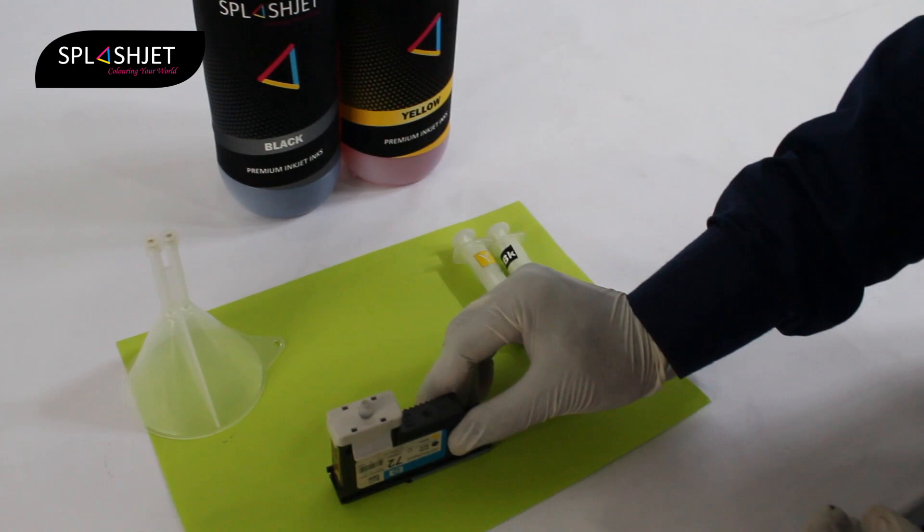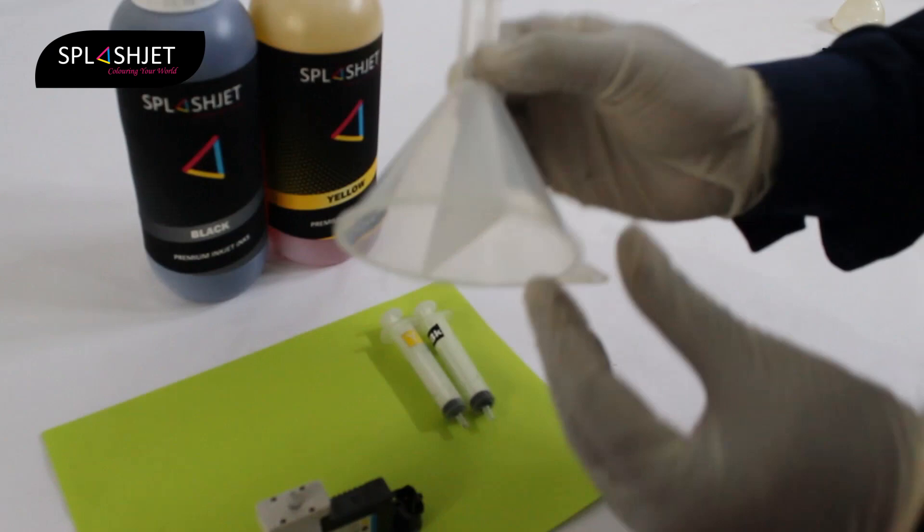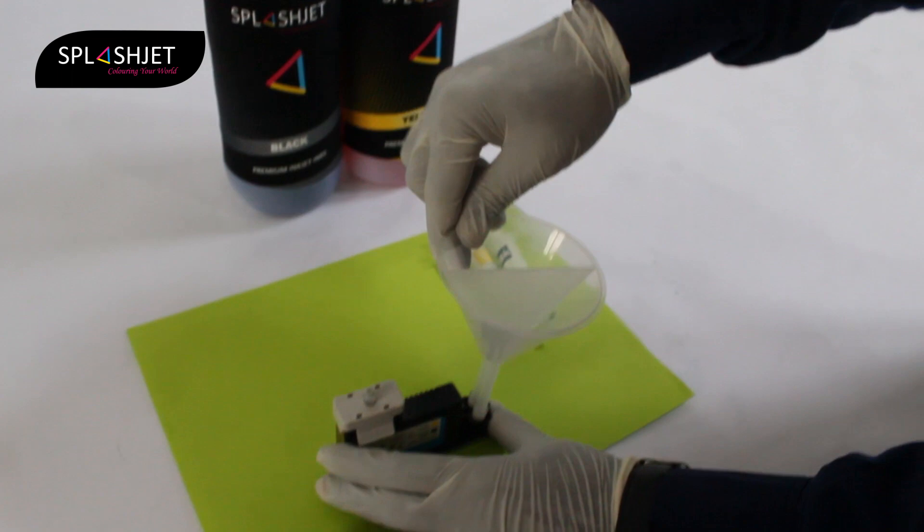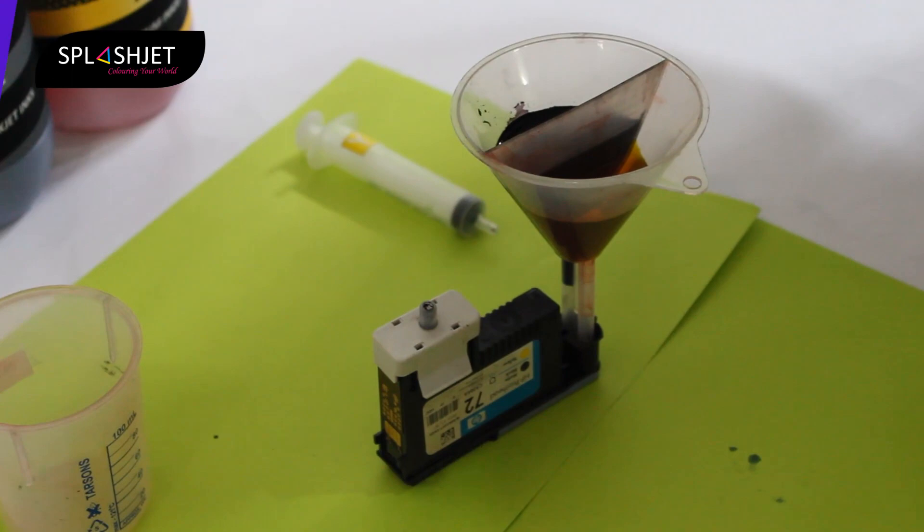Afterwards, we have a specially manufactured funnel which has compartments inside it for two colors. It has special adapters on the bottom side to fit in properly on the print head. And then we have to use the syringe. Let us see the actual priming process.